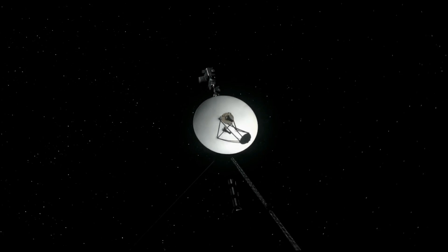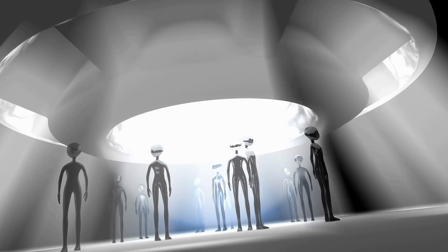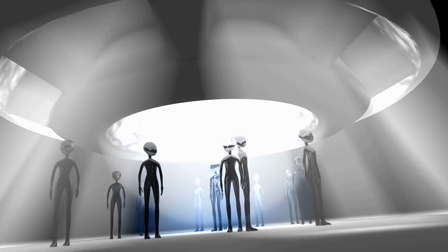The spacecraft also carried a phonograph record, known as the Voyager Golden Record, which contained sounds and images representing life on Earth. The record was intended as a message to any extraterrestrial intelligence that might encounter the spacecraft.